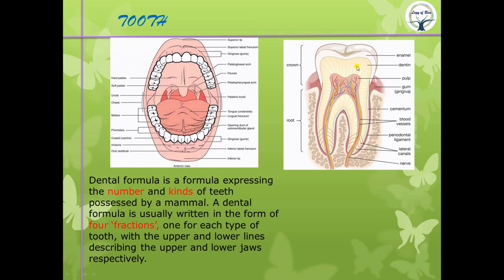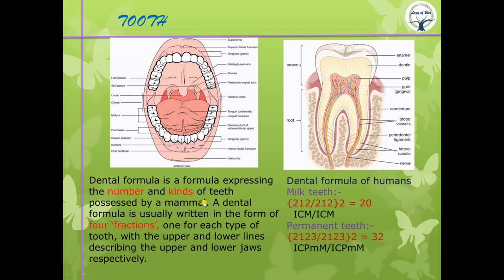Blast means embryonic cell. Enamel — ameloblasts; dentine — odontoblasts. The pulp cavity contains nerve endings and blood vessels. The gingiva or gum surrounds the tooth. The periodontal ligament is a group of specialized connective tissue fibers that attach the tooth to the alveolar bone socket.